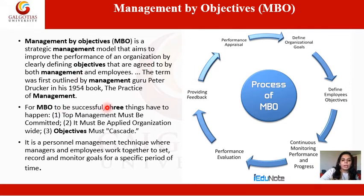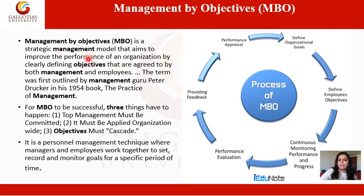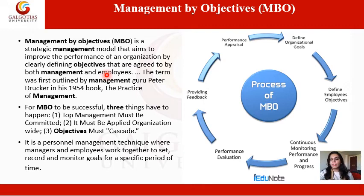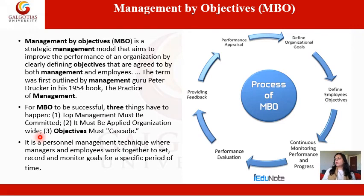MBO was given by management guru Peter Drucker in his 1954 book 'The Practice of Management.' It improves organizational performance by clearly defining objectives agreed to by both management and employees — they both sit together and clearly define their goals. For MBO to be successful, top management must be committed, it must be applied organization-wide, and objectives must be cascaded one after the other. It is a personal management technique where managers and employees work together to set, record, and monitor goals.